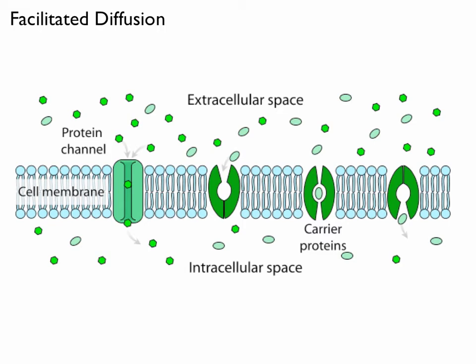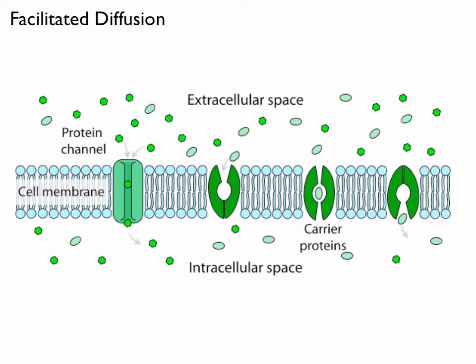We have two types of particles — little hexagon particles and little oval particles — that maybe can't pass through the phospholipid bilayer because they don't have the right charge, the right shape, or maybe they're slightly too big. So the cell has special protein channels that can allow those particles to move through. This protein channel is shaped in a precise way to allow only one kind of particle through. If the cell wants the oval-shaped particle to come through, it might use something different.